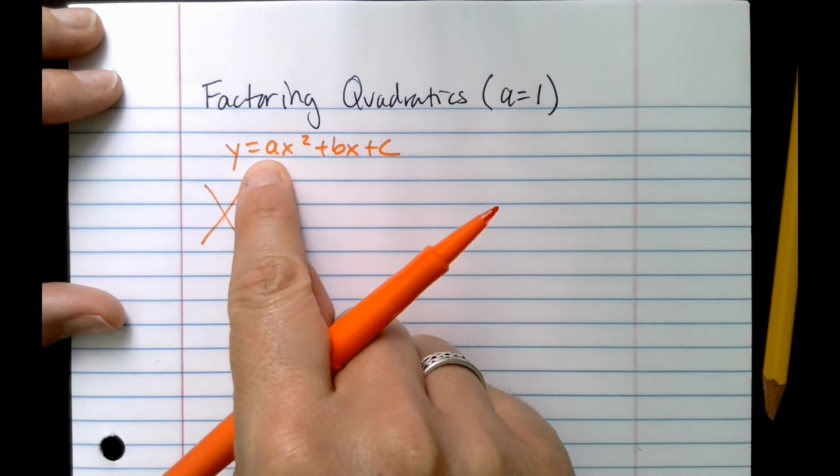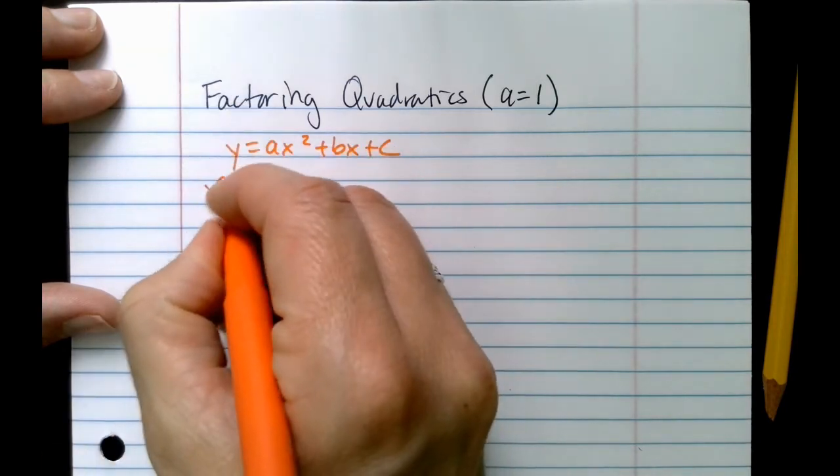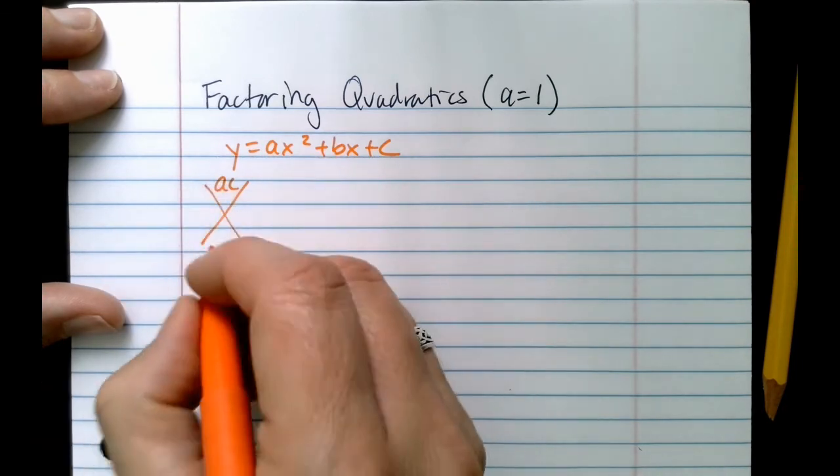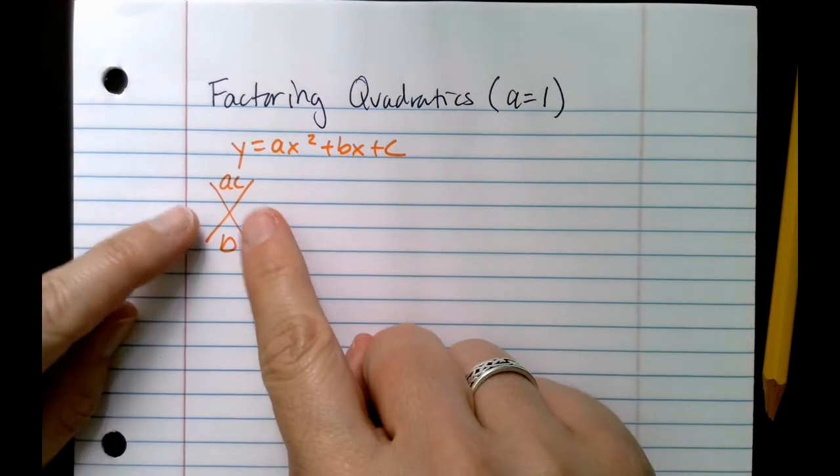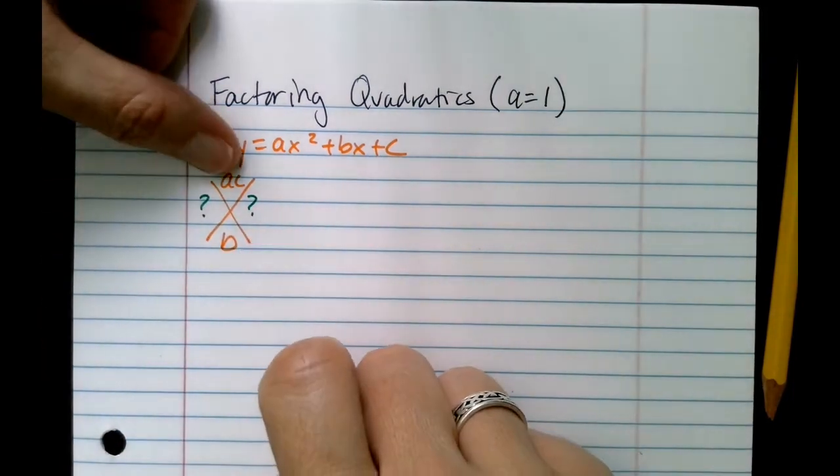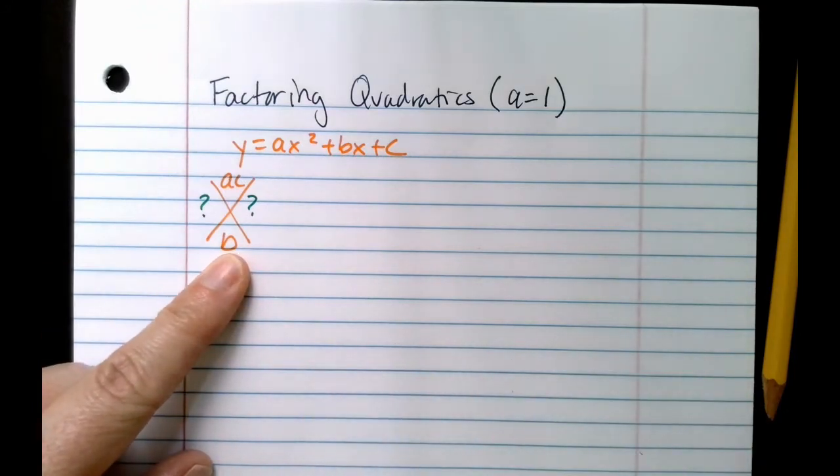Here's a method you could use for factoring. You're going to multiply the first coefficient, the leading coefficient, times the constant, and whatever the number B is, plus or minus, you bring it down here. So then you're trying to figure out what two numbers multiply to give you the number up top but then combine to give you the number on the bottom.